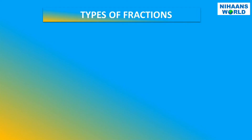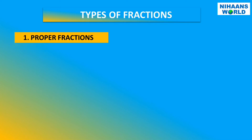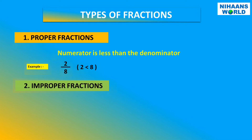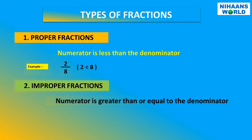Types of fractions. Proper fractions: a fraction in which the numerator is less than the denominator is called a proper fraction. For example, two is less than eight, thus we say that two upon eight is a proper fraction. Improper fractions: a fraction in which the numerator is greater than or equal to the denominator is called an improper fraction. For example, five is greater than two, thus we say that five upon two is an improper fraction.